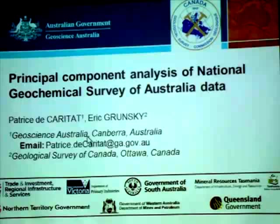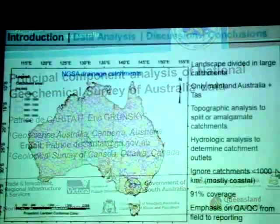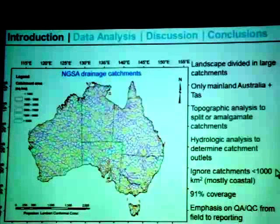The landscape of Australia was divided into large catchments. The idea was to collect one sample per catchment at the bottom of these catchments, representing the contribution of all the weathered rocks and soils upland from that sample. We aimed to have catchments about 5,000 square kilometers in size, given a finite budget and approximately four to five years, and found we could deal with about 1,500 sites at most.